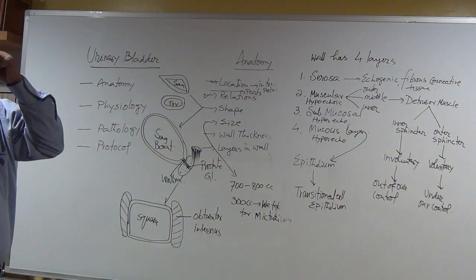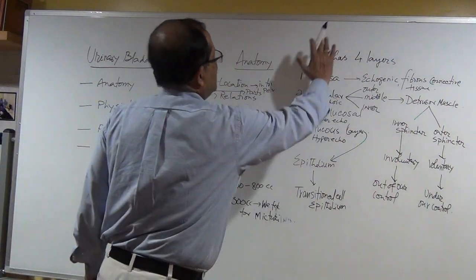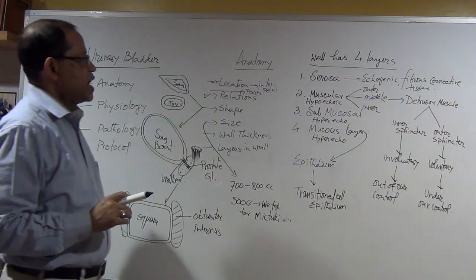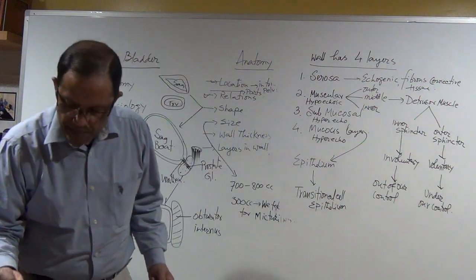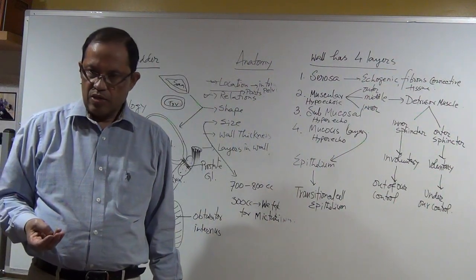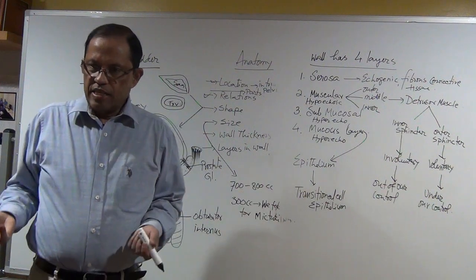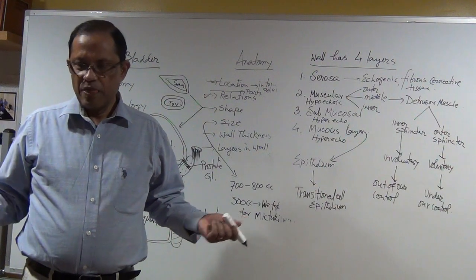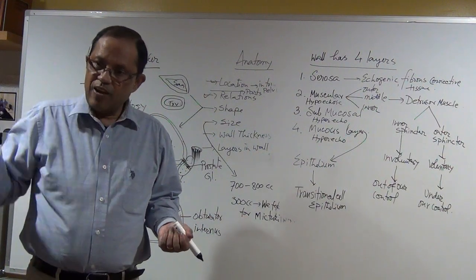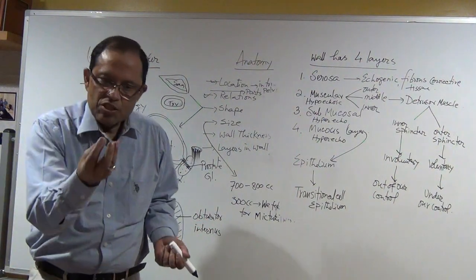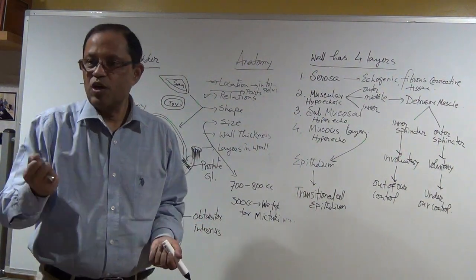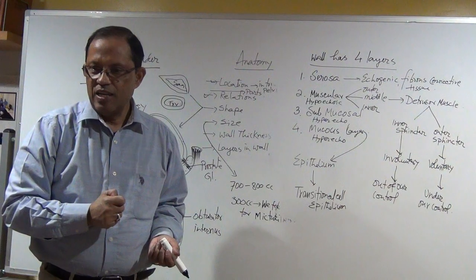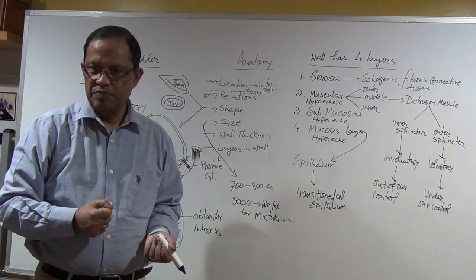Why do we need to know all these layers? Keep this in mind: in the urinary bladder — just like the gallbladder — pathology is either in the wall or inside the lumen. When the wall is inflamed we call it cholecystitis; a stone inside the lumen is a gallstone; a polyp or tumor is within the wall. The same principle applies to the urinary bladder.